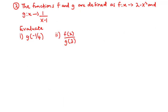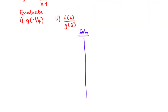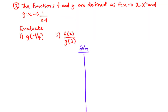For question 2 — NOVDECK 2010 question 12b — the functions f and g are defined as f(x) maps to 2 minus x squared and g(x) maps to 1 over x minus 1. We are asked to evaluate: part i, g of negative 1 over 4, and part ii, f of 2 divided by g of 3.